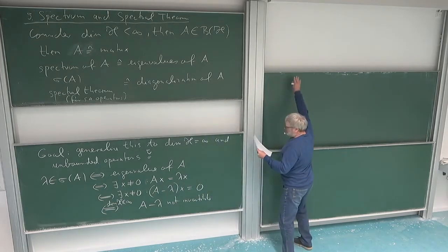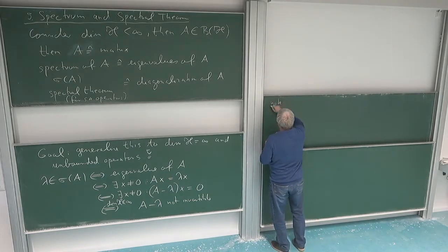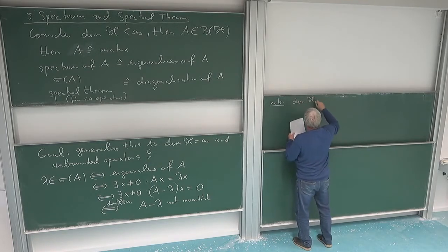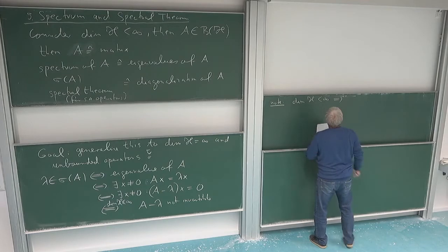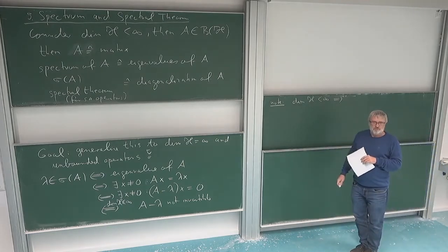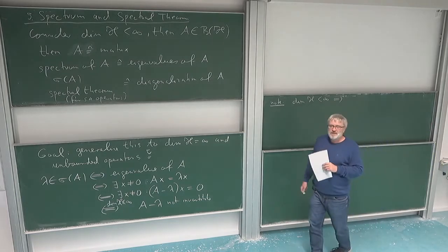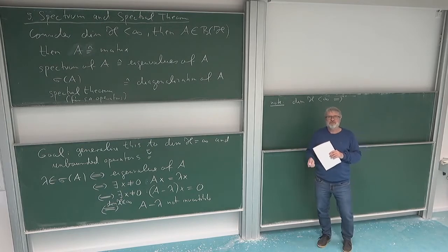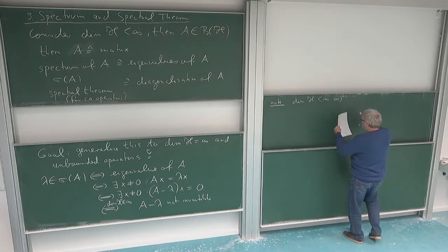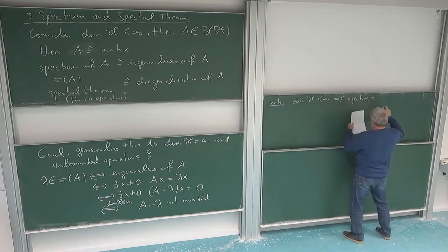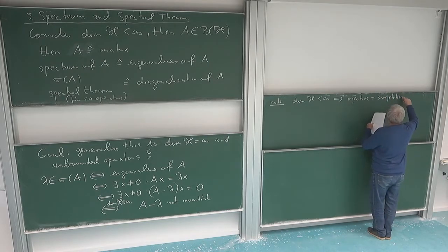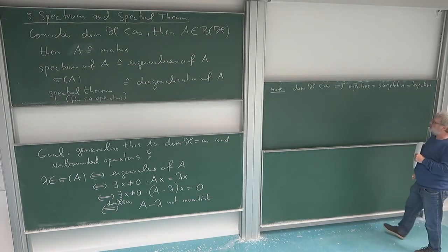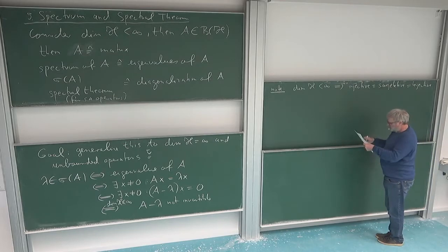Let me write this down explicitly because this is one of the crucial main differences between finite and infinite dimensions. In finite dimensions, for linear mappings, injectivity is actually the same as surjectivity, and this means it's the same as bijectivity. So the invertibility of an operator in finite dimensions is just the question whether it's injective or not, because if it is injective then it's automatically surjective, and if it is not injective then it's also not surjective.